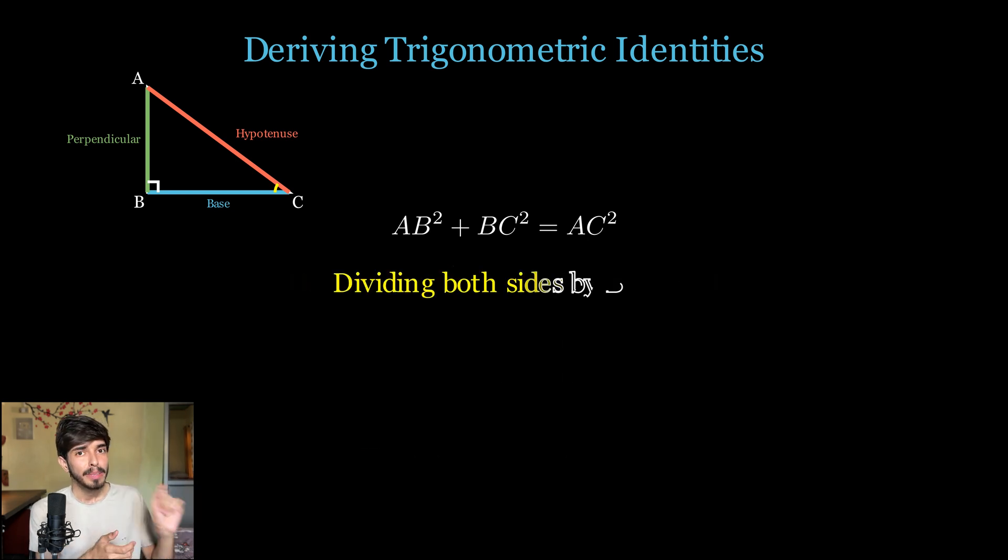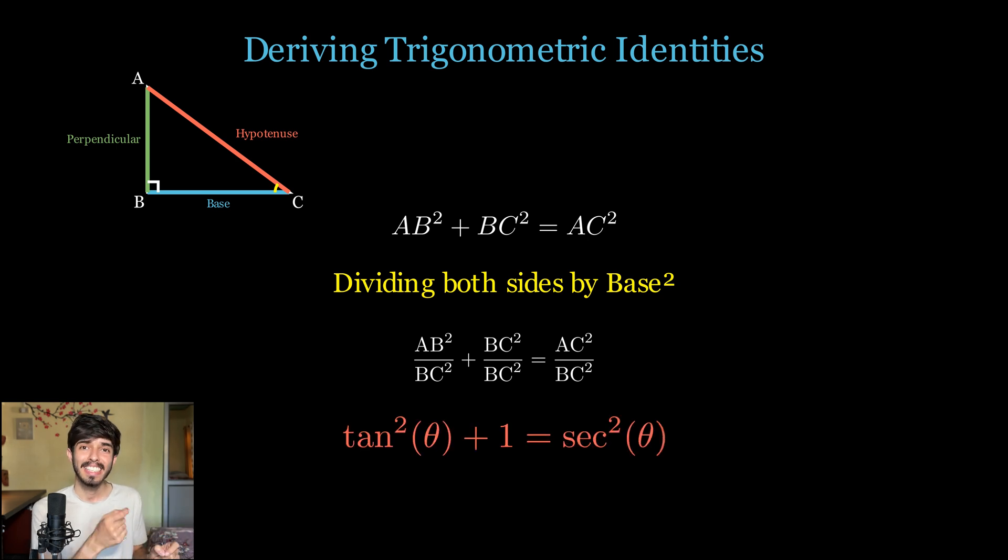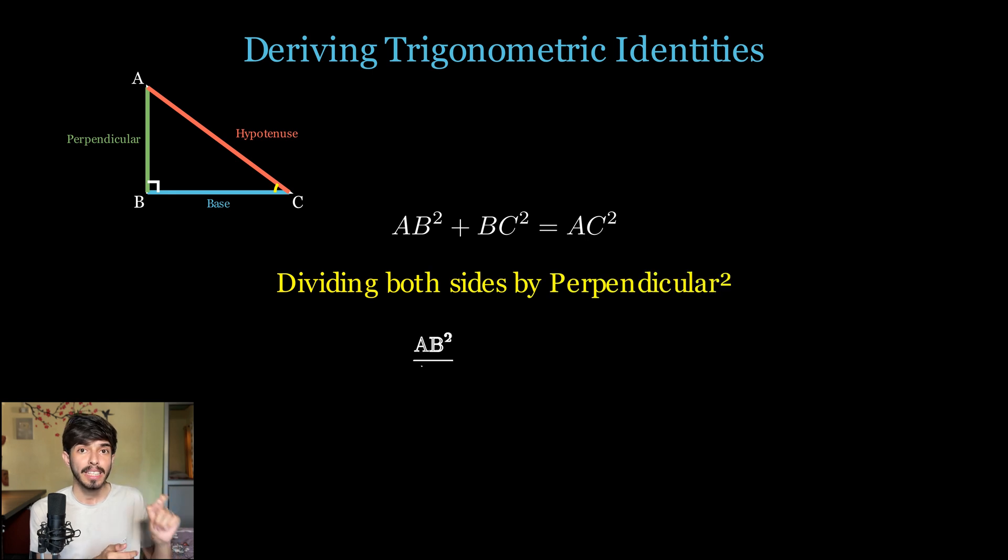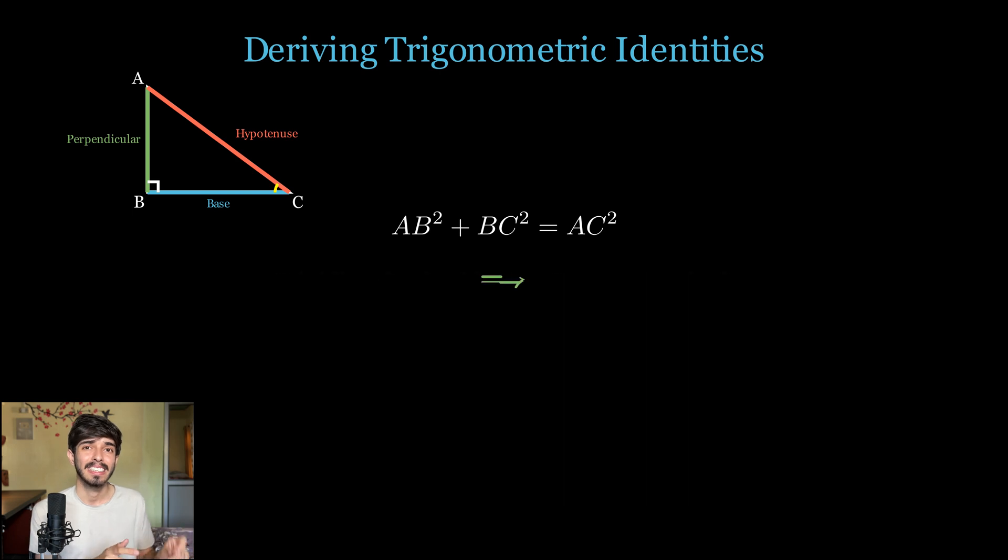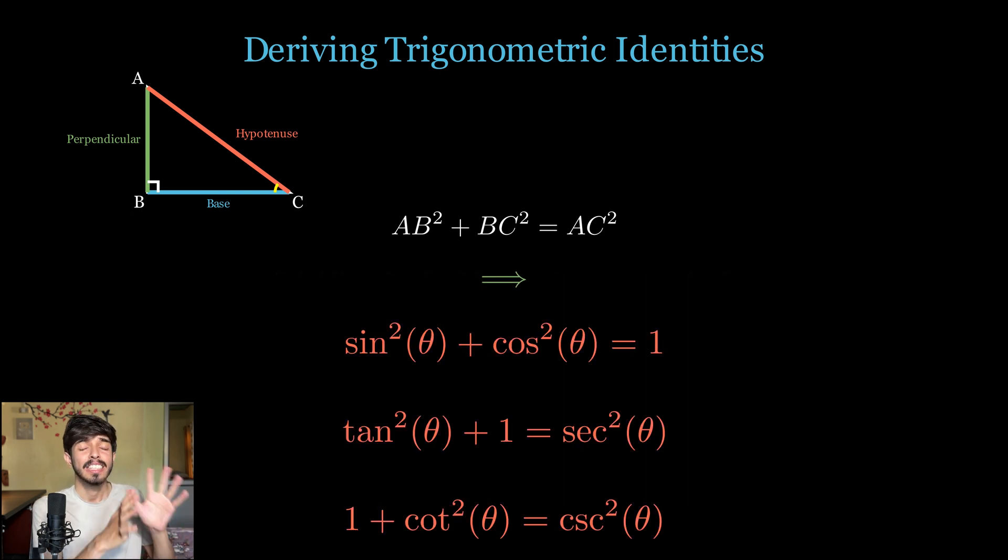And dividing by BC square gives you 1 plus tan square theta is equal to secant square theta. Now similarly exactly same, divide this by AB square. Cot square theta plus 1 is equal to cosecant square theta. And deriving these relations is as simple as this. Just remember the Pythagoras theorem. Once divided by the square of this side, then this side, and this side, and then you can derive all these three very important identities of trigonometry.